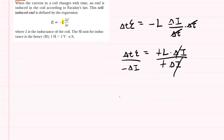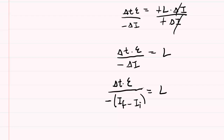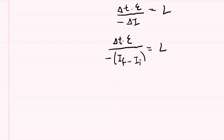On the right-hand side, we have our expression for the inductance: it's the time interval times the induced EMF divided by negative change in current. It may be helpful to rewrite the change in current as final current minus initial current, because those are the values given in the question. So in parentheses, we'll have the final current minus the initial current.